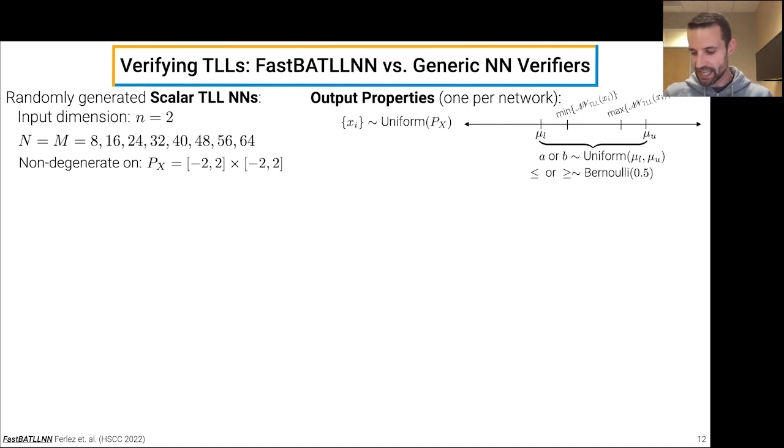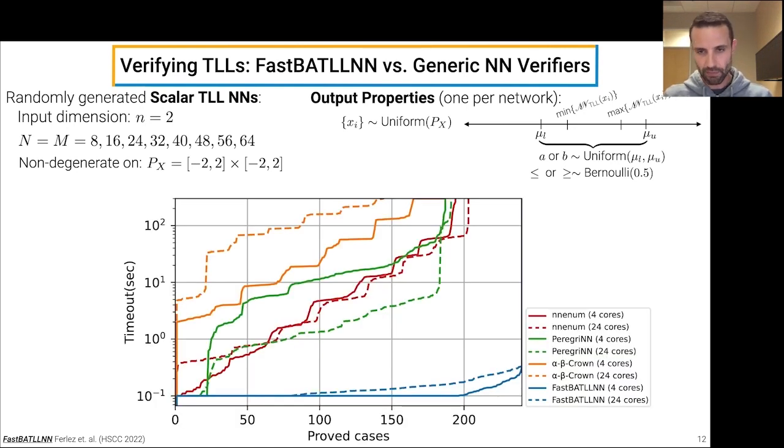So choosing a timeout of 300 seconds, we compared FastBATLLNN with a number of state-of-the-art neural network verifiers on this test suite, and in particular, note that FastBATLLNN with either 4 cores or 24 cores was able to successfully prove all of these properties. In fact, you can see that FastBATLLNN was using less than a second for all of these properties, whereas none of these state-of-the-art neural network verifiers were able to verify the entire test suite. So this is a strong motivation for considering TLL neural networks in the future or pretty much anything you want to do where you're eventually going to want to use formal verification.